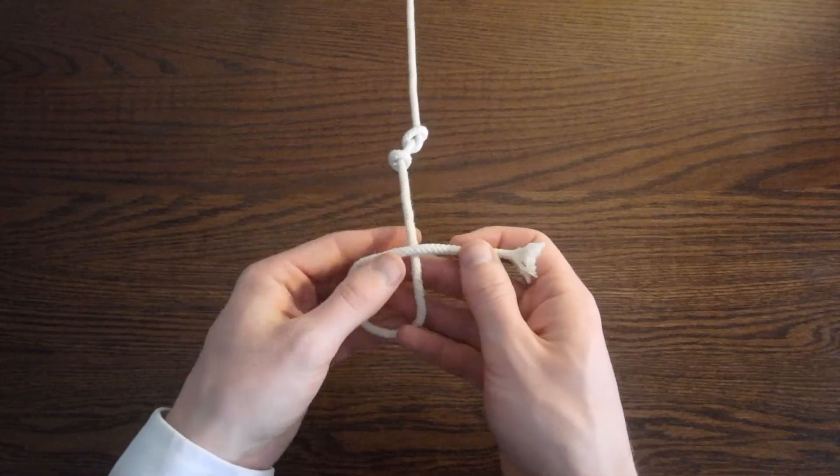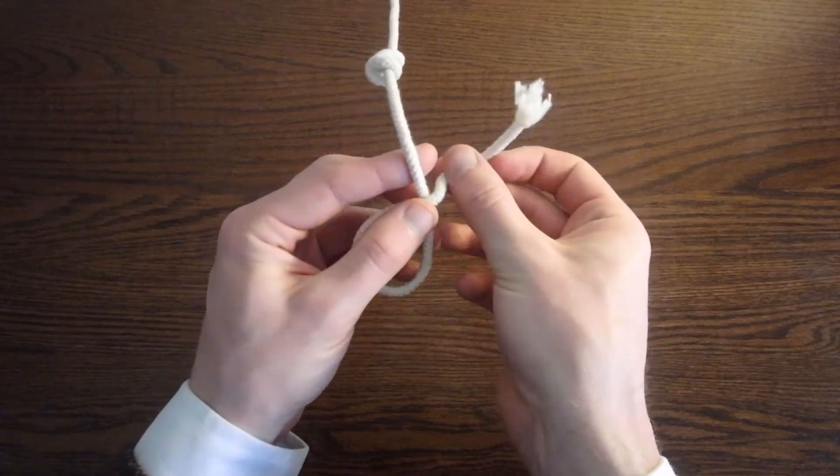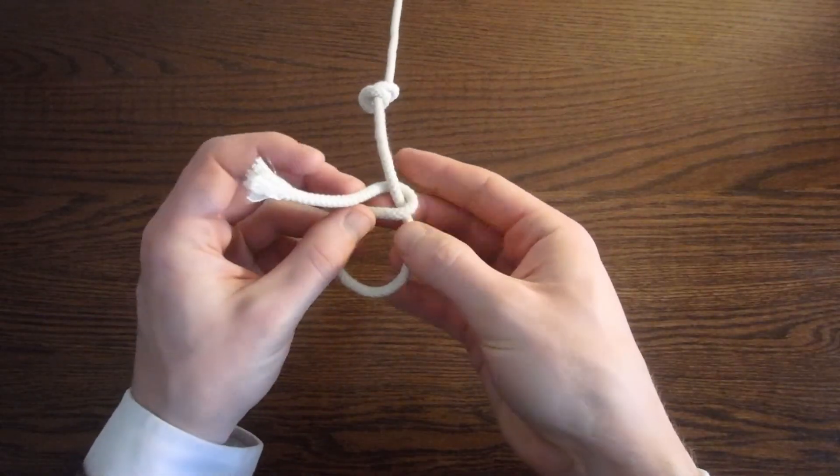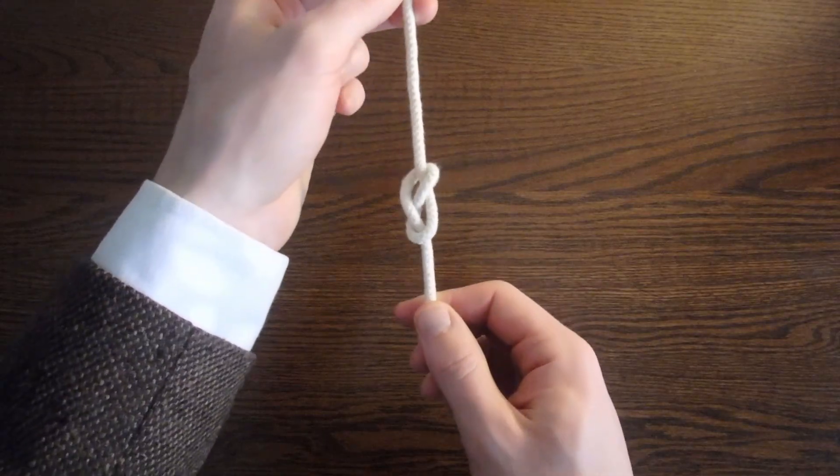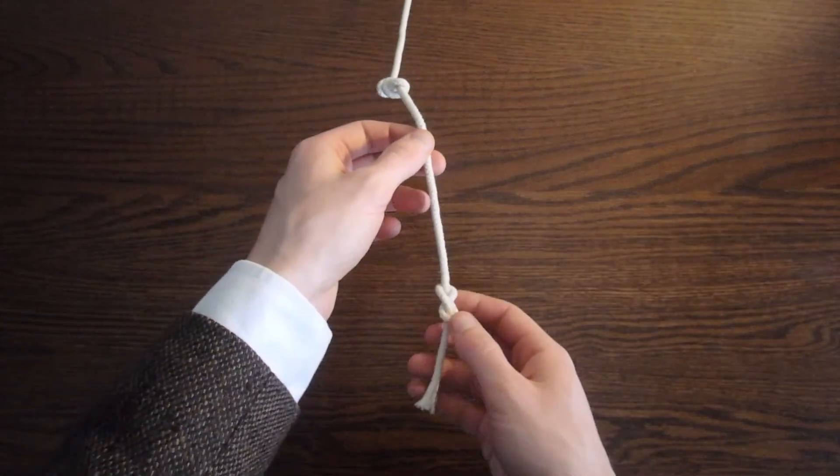So instead of using a long knot, I will use what is called a figure 8 knot to represent the number 1. Figure 8 knots are only used to signify the number 1. You tie them by passing the cord behind itself and through the loop you've made.